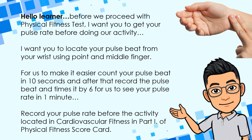Before we proceed with the physical fitness test, I want you to get your pulse rate before doing our activity. Locate your pulse beat from your wrist using your pointer and middle fingers. Count your pulse beat in 10 seconds, then record it and multiply by 6 to get your pulse rate per minute. Record your pulse rate before the activity in the cardiovascular fitness section of Part 1 of the physical fitness scorecard.